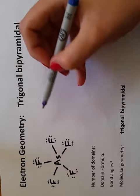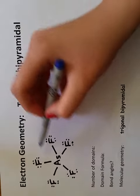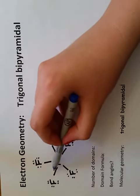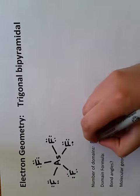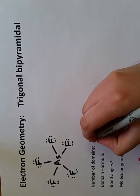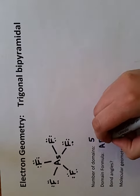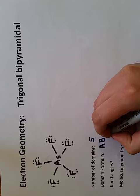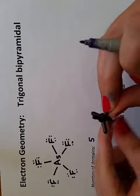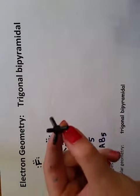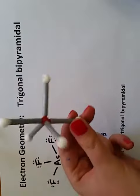Here you can see we have a compound with five bonding domains around the central atom. None of the domains are lone pair domains. You need to select a central piece with five arms and build the compound.